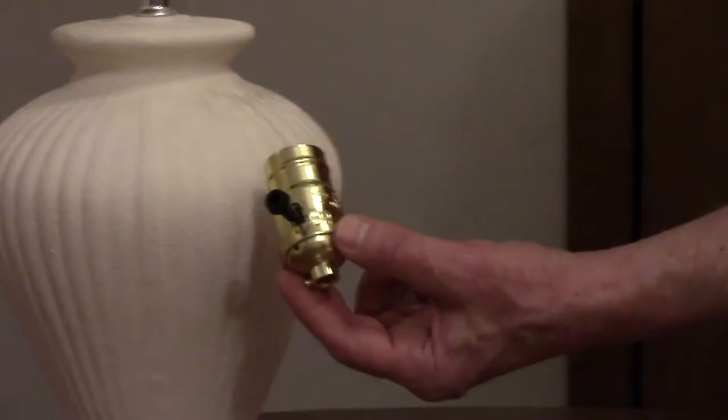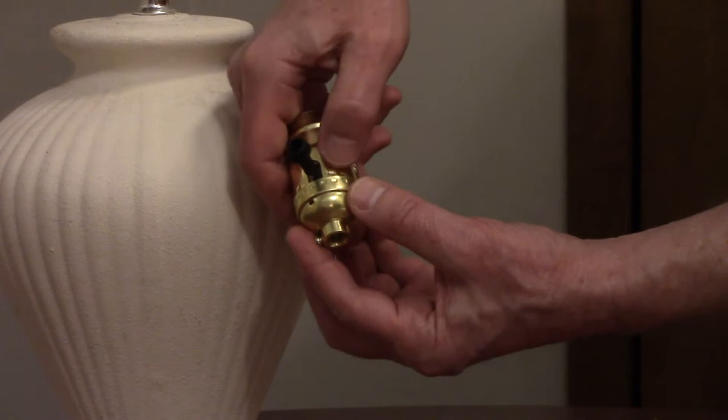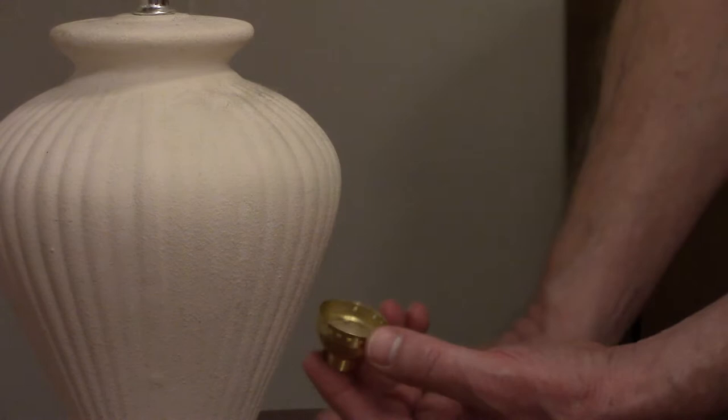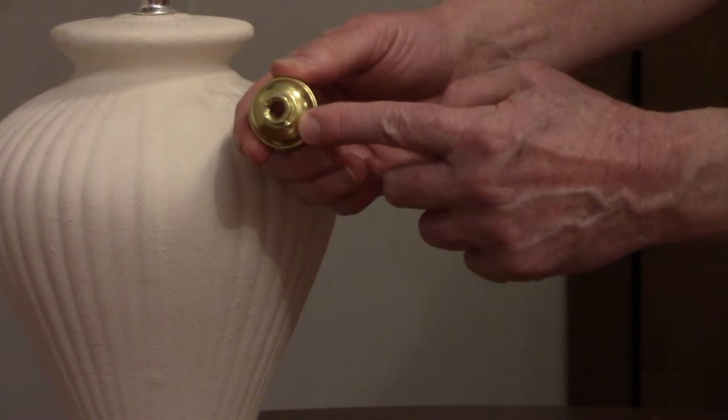On the new lamp socket, squeeze the outer shell and separate it and the socket from the base. You're going to screw the new base onto the lamp. Some will have a set screw that will need to be tightened.